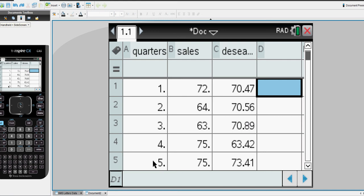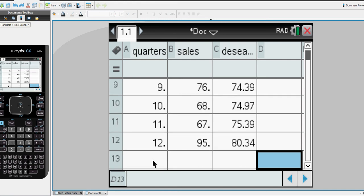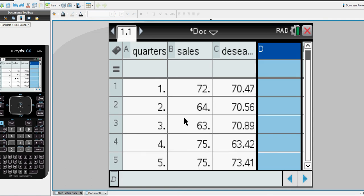The following year, the next quarter is 5, 6, 7, 8. Then the final year was quarter 9, 10, 11 and 12. We've got our sales and I've also entered in the deseasonalized data.